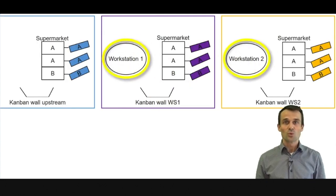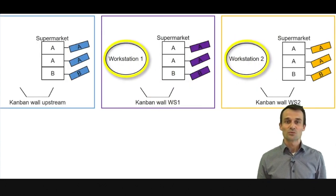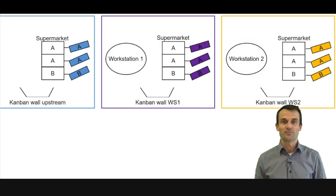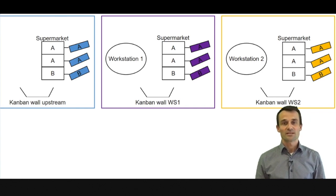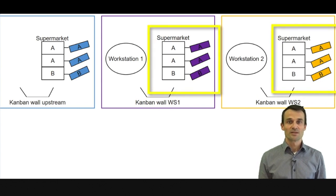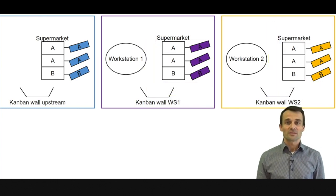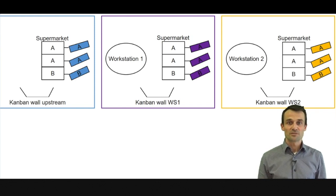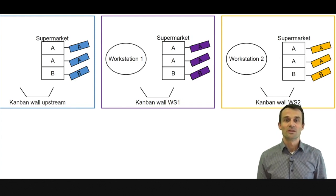The first method we will discuss is Kanban. Kanban is illustrated here with a very simple example. We have two workstations producing two types of products, A and B. Every workstation has a so-called supermarket — a limited inventory of intermediate products, or in the case of workstation 2, finished products.